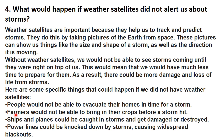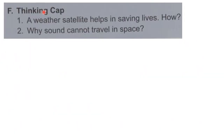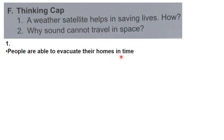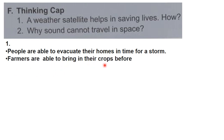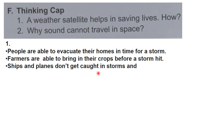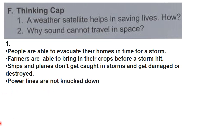With weather satellites, we are able to evacuate homes in time for a storm. Farmers are able to bring in their crops before a storm hits. Ships and planes don't get caught in storms and get damaged or destroyed. Power lines are not knocked down by storms causing widespread blackouts.